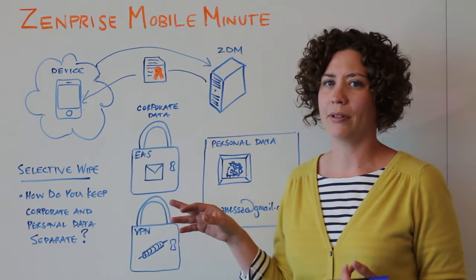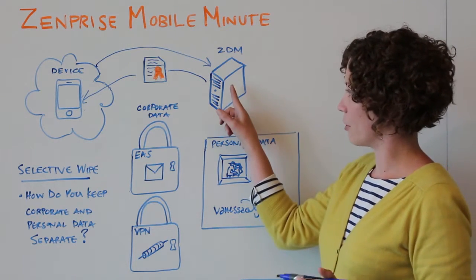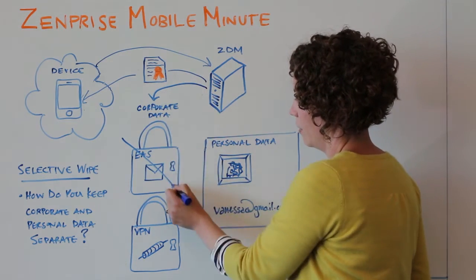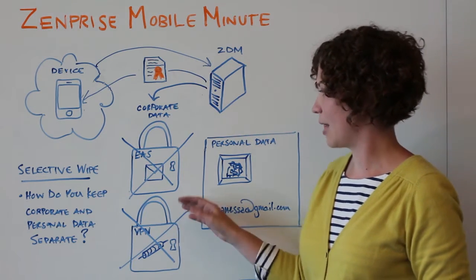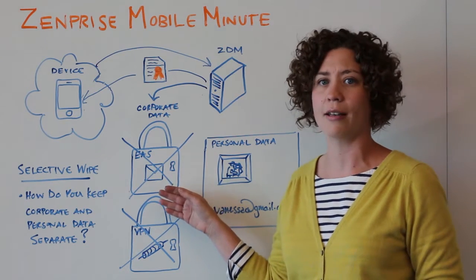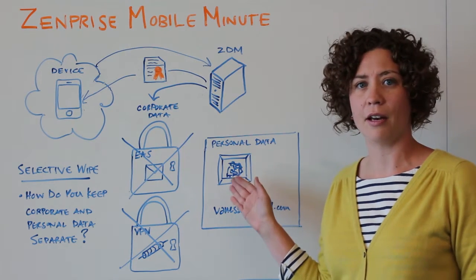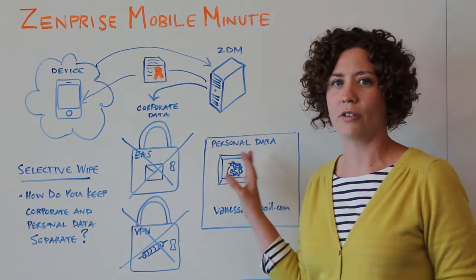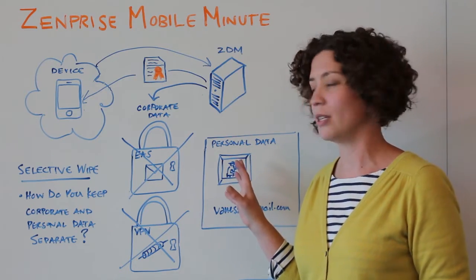So let's talk about what happens when a device gets selectively wiped. The ZDM server is going to go out and remove these profiles. Not only is that going to remove the ability to talk to the Exchange server, but it's going to remove all that data at rest, including mail. The personal data is untouched — Gmail, photos — we don't have any knowledge of that, and that's the way we'd like to keep things in order to support a BYOD initiative.